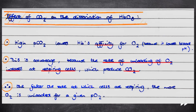Note that the partial pressure of CO2 also has an influence on the dissociation of oxyhaemoglobin. A high partial pressure of carbon dioxide lowers haemoglobin's affinity for oxygen because it lowers the blood pH. This is an advantage because the rate of unloading of oxygen therefore increases at respiring cells, which produce carbon dioxide as a byproduct of respiration.